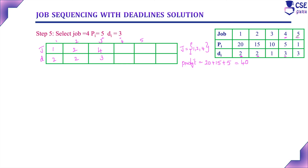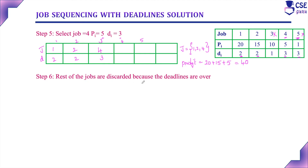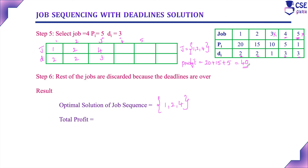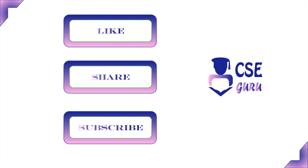Consider job 5 with deadline 3. However, the third unit of time is already assigned to job 4, so job 5's deadline is already over and it cannot be assigned. Jobs 3 and 5 are both discarded because their deadlines are already over. The optimal solution for this job sequencing problem is the job sequence: jobs 1, 2, and 4, with a total profit of 40. Thank you for watching this video.